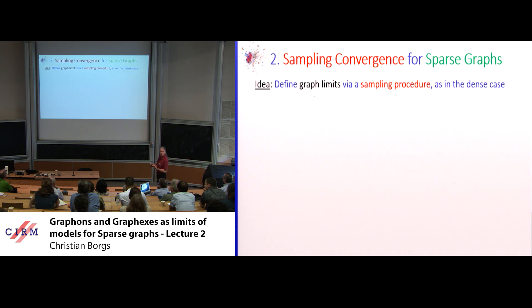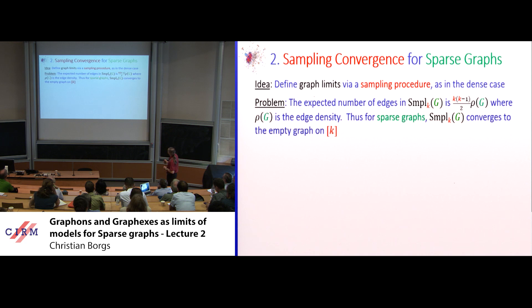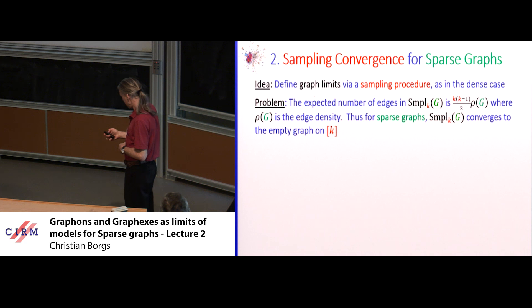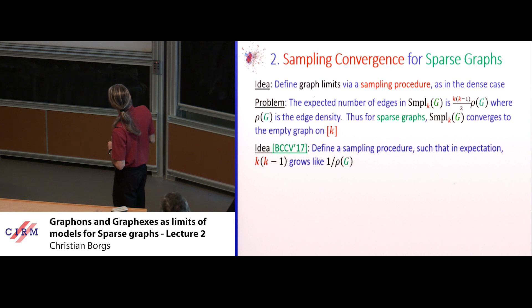Let's try the same approach as before for sparse graphs. The problem is the expected number of edges in the induced subgraph is k-choose-2 times the edge density. Since the edge density goes to zero for fixed k, this always gives the empty graph — a nice limit, but not interesting. To get around this, we let k grow with n so that k is of order 1/ρ, allowing the density to cancel.